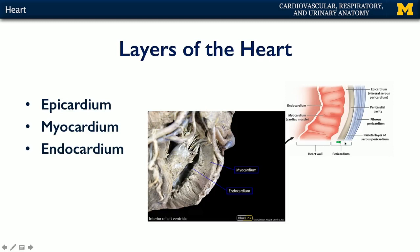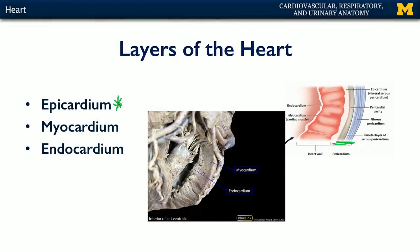Beyond the pericardium, we have the actual layers of the heart proper. Interestingly, one of these three layers is part of the pericardium — the epicardium, which is actually the visceral serous pericardium so adhered to the heart surface that it becomes part of it. Just deep to the epicardium is the myocardium, the muscular wall of the heart. And then contained within the myocardium is the endocardium, which lines the various chambers of the heart.